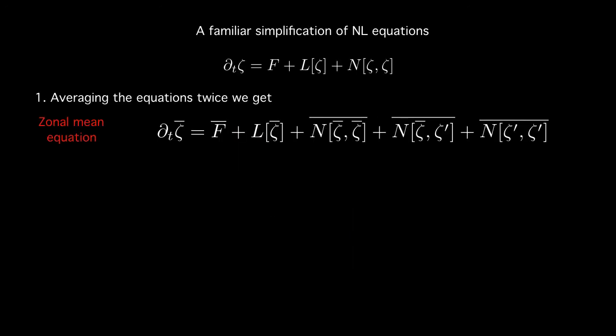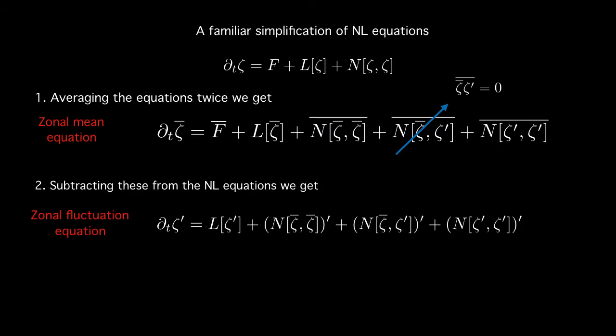Now knowing this decomposition we can apply an averaging to the fully non-linear equations twice so we get the equation for the zonal mean equation and notice that one of these terms automatically disappears because it consists of an average of a fluctuation. When we subtract the zonal mean equation from the fully non-linear equations we come up with the equation for fluctuations. Again in this equation a term vanishes because it is a fluctuating term arising from the product of means that's not possible so we get zero.